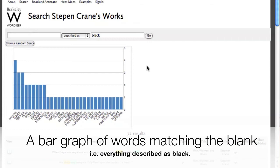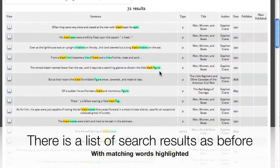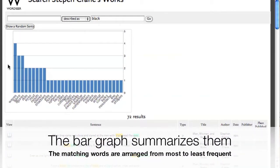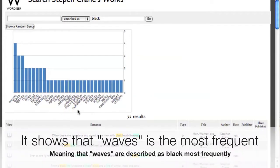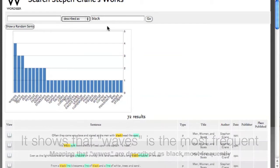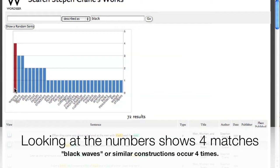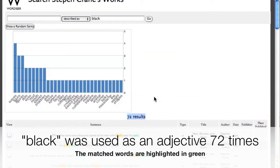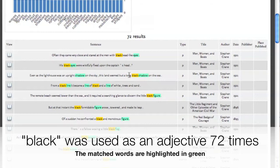I get a list of search results augmented with a bar graph. The bar graph shows all the matching words in order of frequency. For example, I see that the word waves occurs, described as black, four times in the text. There are 72 instances in total of black being used as an adjective, each corresponding to a search result. The matching word is highlighted in green.